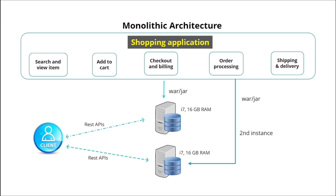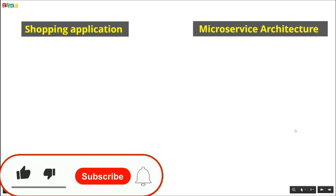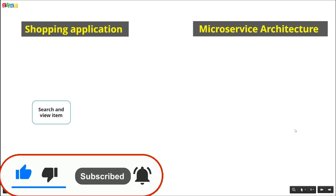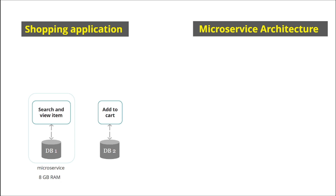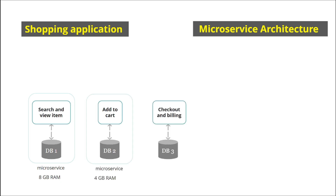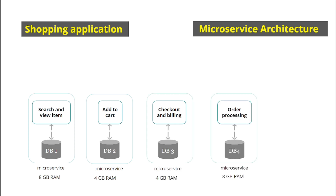Let's see microservice architecture for the same shopping application. In microservice architecture, we consider each feature as a separate microservice. Search and View Item is a separate microservice deployed on its own server. Add to Cart is also deployed on a different server. Checkout and Billing is deployed on a different server, and Order Processing as well as Shipping and Delivery also each have their own server. Based on requirements, we can configure the server resources like RAM and storage accordingly.